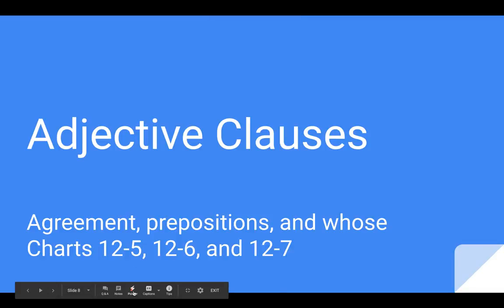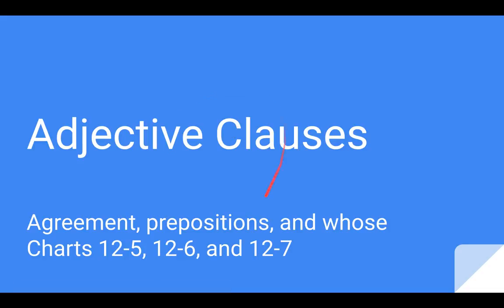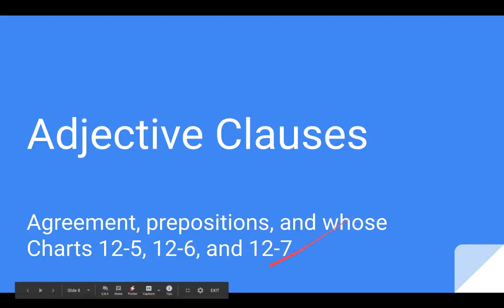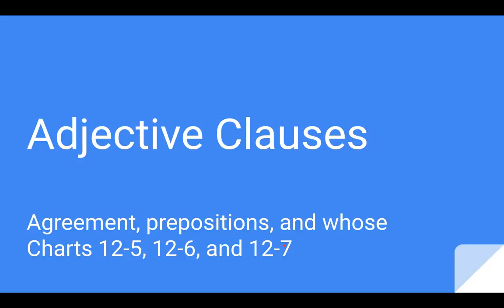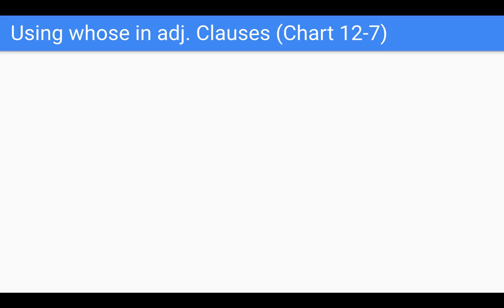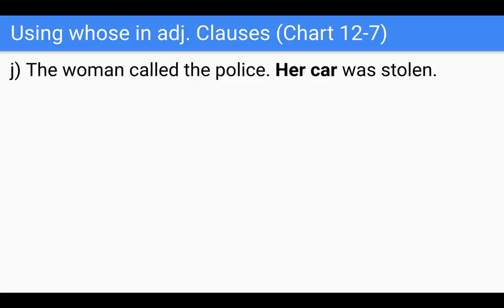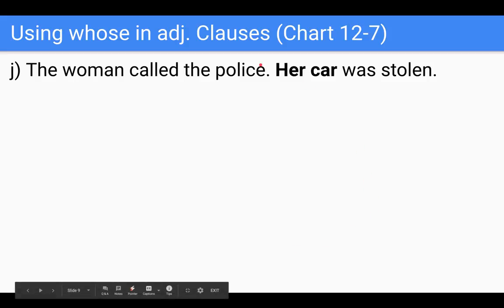Hi, this is Kevin, and this is the last video about adjective clauses. I'm going to talk about using 'whose' — that's chart 12-7 on page 336 in your textbook, so you can check there for another example. 'Whose' is pretty easy. This is talking about possession or possessive pronouns. Don't worry, you don't need to remember those words — it's not important. But take a look at this example; I think you will understand.